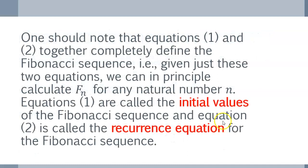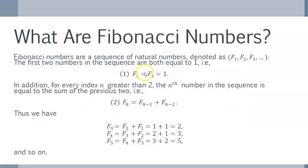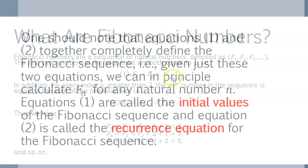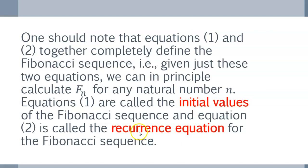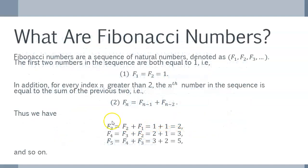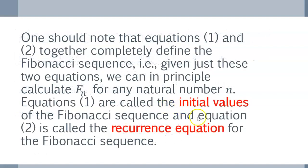So, we should note that these two equations I wrote down, equations 1 and 2, together completely define the Fibonacci sequence. Equation 1 is what we call the initial conditions, and equation 2 is what we call the recurrence equation. So, those two equations completely define the sequence. Once you have those two equations, you know Fn for every positive integer n.